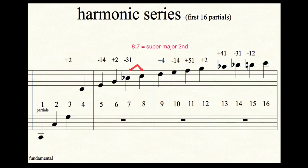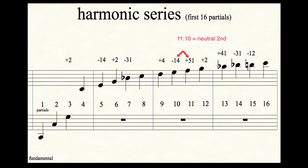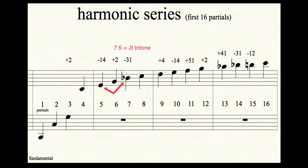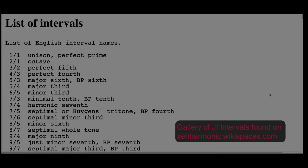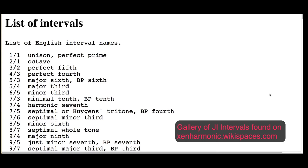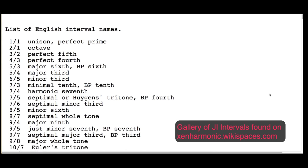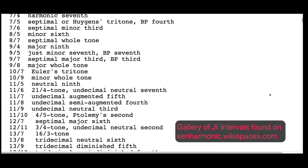There are just a ton of interesting intervals and chords that can be derived from the harmonic series, and in a way they can be thought of as having a kind of consonance because the notes have a simple mathematical relationship to each other and are reflective of the naturally occurring harmonic series. One concept about these ratios is that the simpler the ratio, the more consonant the interval will be. So for example, a 3:2 perfect fifth will be perceived as more consonant than a 7:5 JI tritone. This isn't always the case and can depend on context, but it's a good rule of thumb.